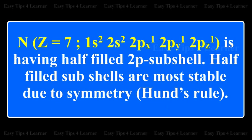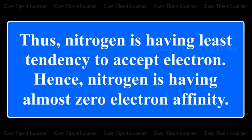Nitrogen (Z = 7) has the configuration 1S2, 2S2, 2PX1, 2PY1, 2PZ1, giving it a half-filled 2P sub-shell. Half-filled sub-shells are most stable due to symmetry. Thus, nitrogen has the least tendency to accept an electron, and hence nitrogen has almost zero electron affinity.